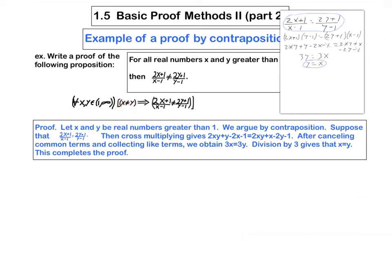So what I do is I use the important steps from here. I don't do everything in absolute detail, just what's needed. So I say then cross multiplying gives this, after canceling common terms and collecting like terms we obtain this, division by 3 gives this.